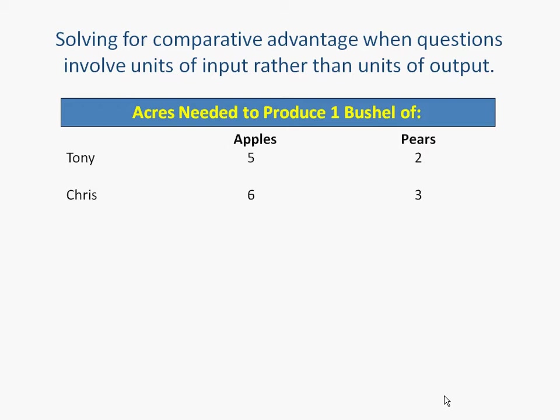Thus far, the comparative advantage problems that we have discussed have all involved units of output — Mr. Gilmore writing tests and me grading papers, or Japan producing a certain number of cars and trucks, and the United States producing a number of cars and trucks. These are all output units. Sometimes — and this is occasionally on both the AP and the IB — questions involve units of input.